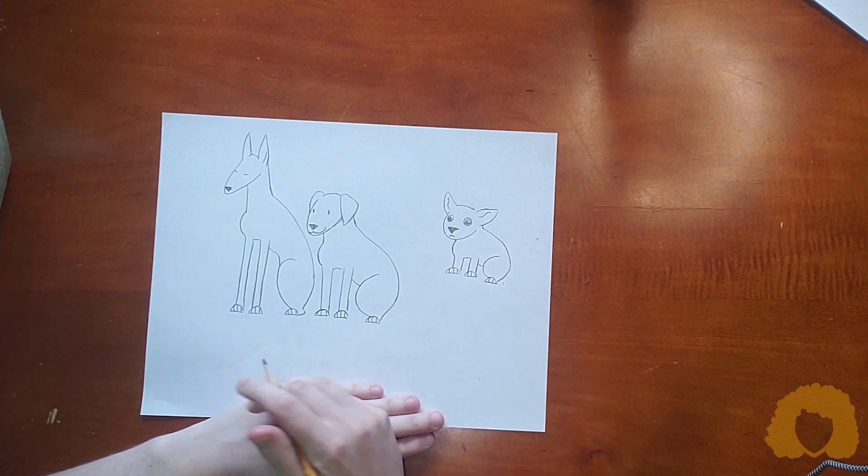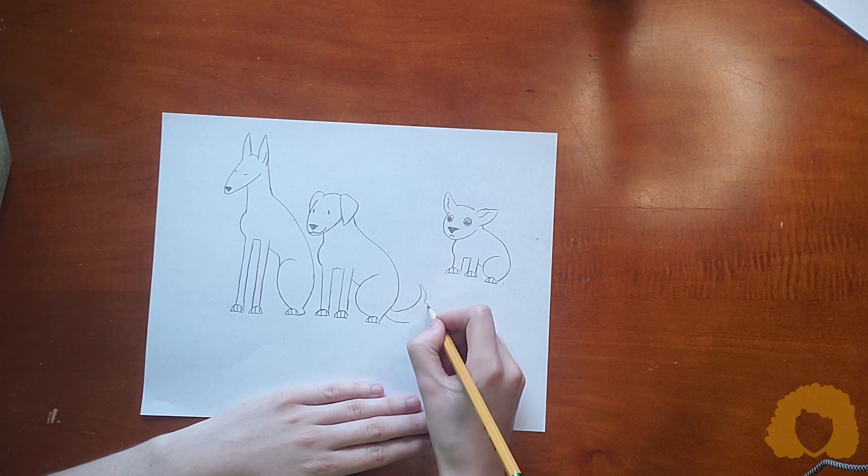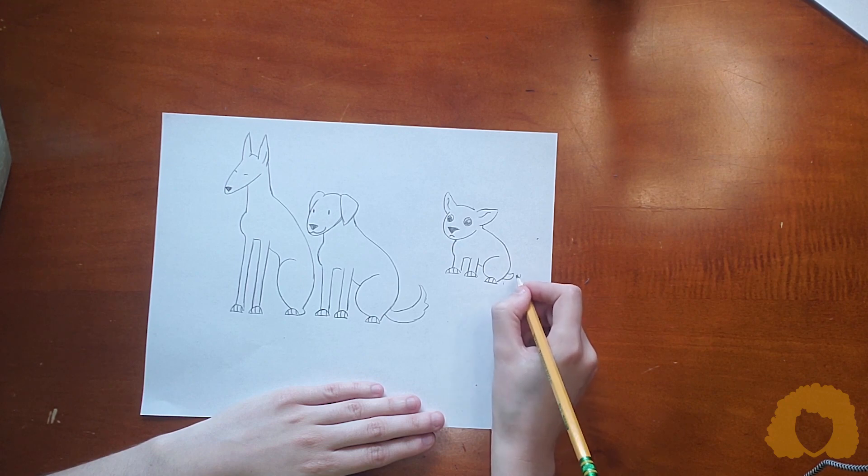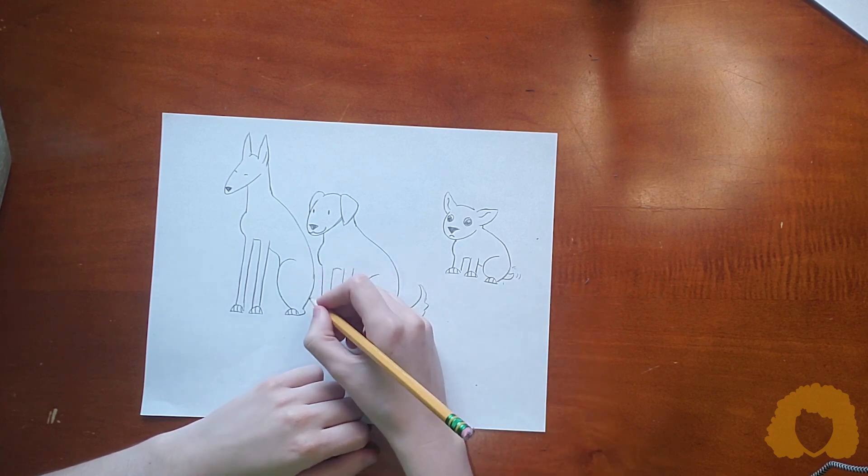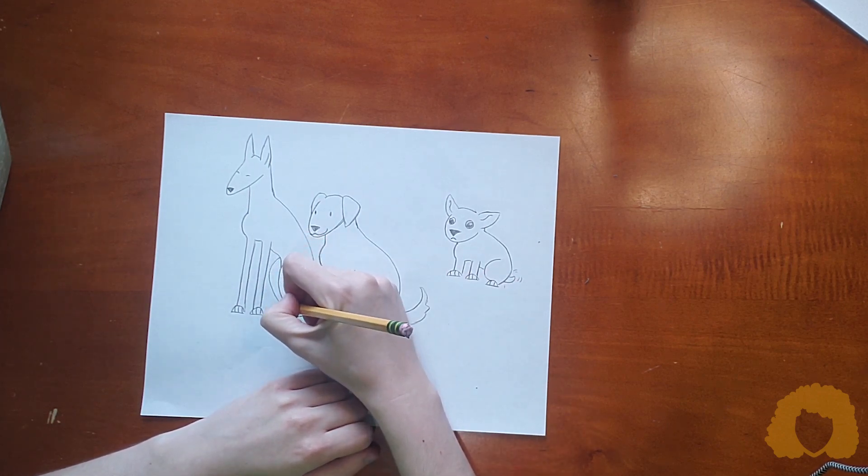And of course, you can add a tail. Make it look like it's waving by adding a couple of little lines. You can also create a shadowed hind leg.